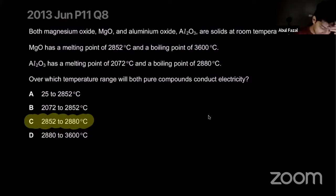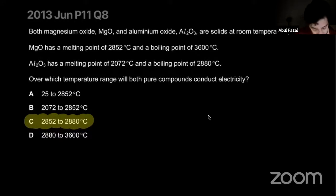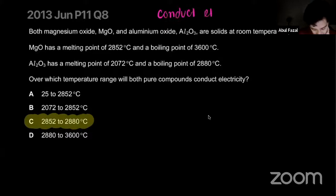Both magnesium oxide and aluminum oxide are ionic compounds. Ionic compounds will conduct electricity when they are molten.